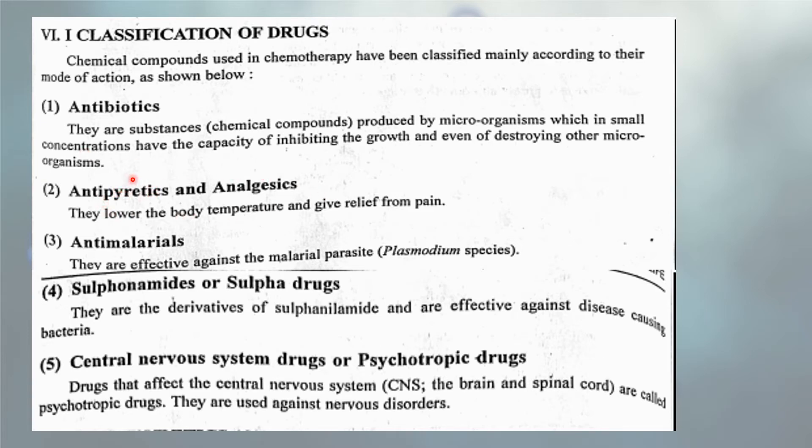Antipyretics — 'pyretics' means they can lower body temperature. Analgesics means they can give relief from pain. Antimalarial drugs are active against malarial parasites. Sulfonamides and sulfa drugs are derived from sulfanilamides and are effective against disease-causing bacteria.